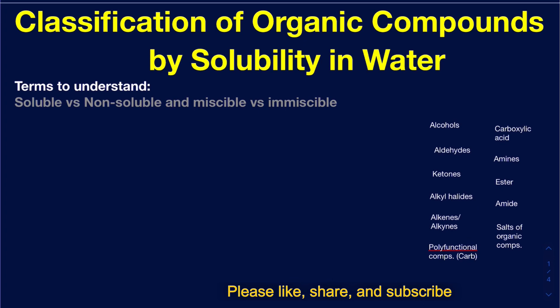I want to talk about a few terms: soluble versus non-soluble, and miscible versus immiscible. If we start with soluble versus non-soluble, we're talking about having some sort of solid solute and dissolving that in a very small amount of water. When we're trying to test the solubility, typically you want to dissolve maybe less than 50 mg of a solid into less than 1 ml of water.